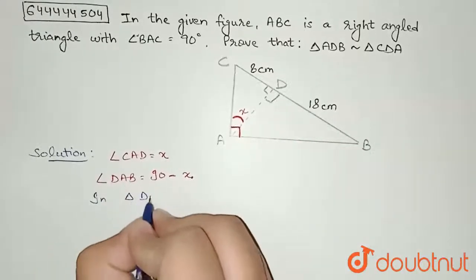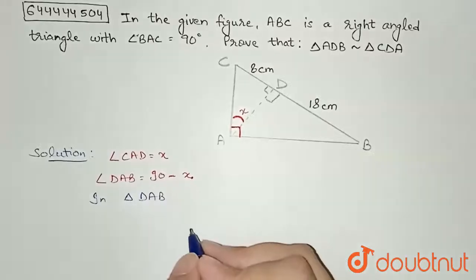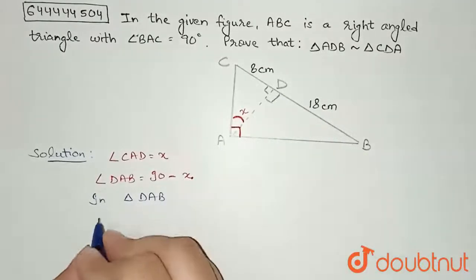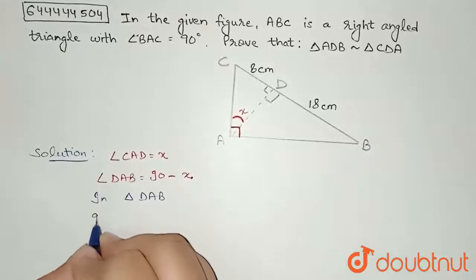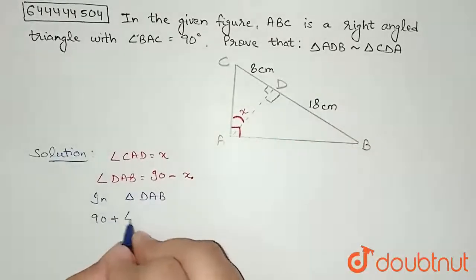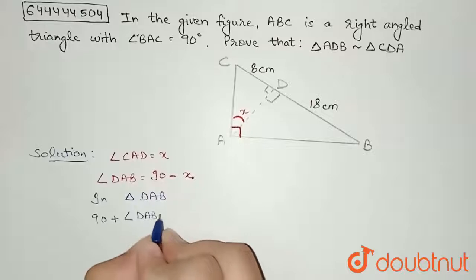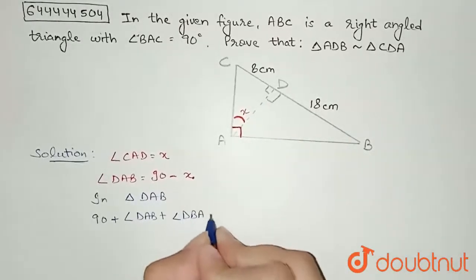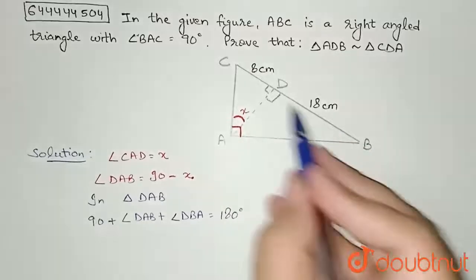In this I can write 90 degrees, because this is 90 degrees, plus angle DAB plus angle DBA equal to 180 degrees, because sum of angles in triangle DAB is 180 degrees.